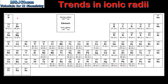I'll start by looking at this data which can be found in section 9 of the IB data booklet. In this section we have data for the atomic radius and the ionic radius. The first thing that we notice is the difference between the atomic radius and the ionic radius of an element.